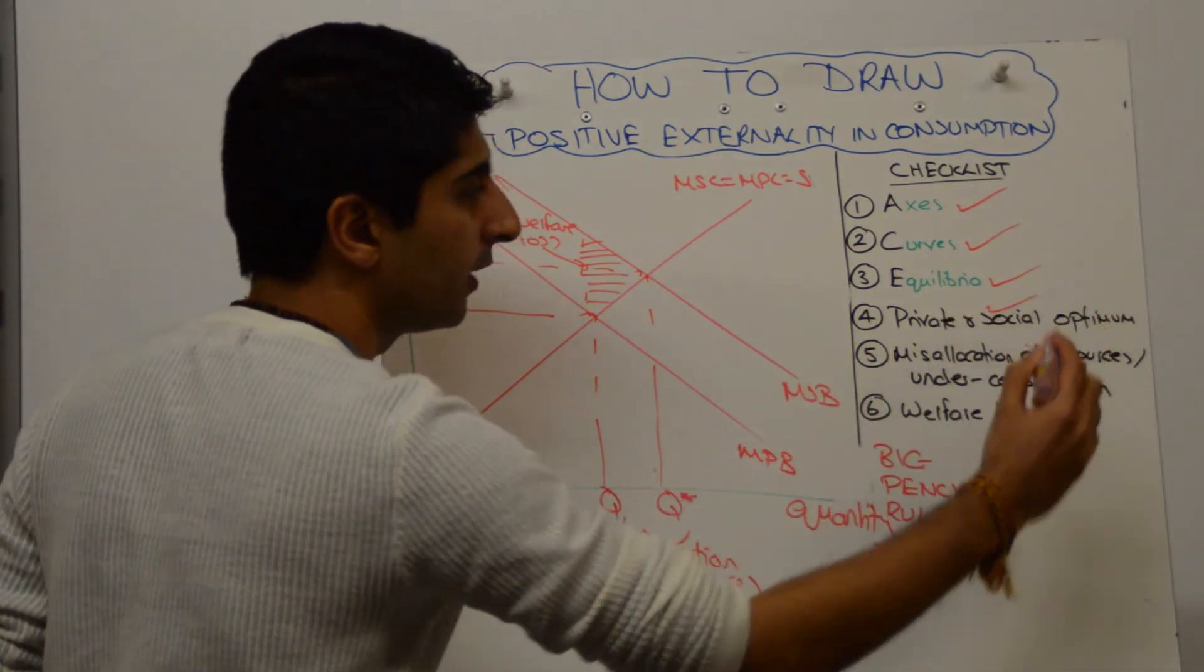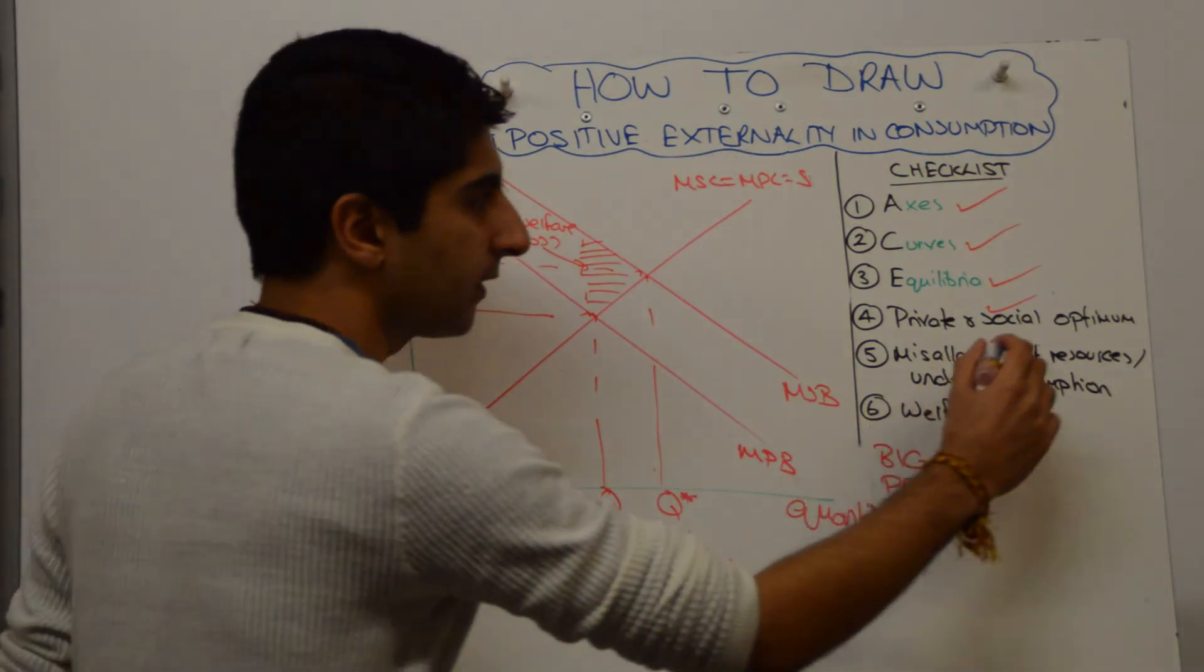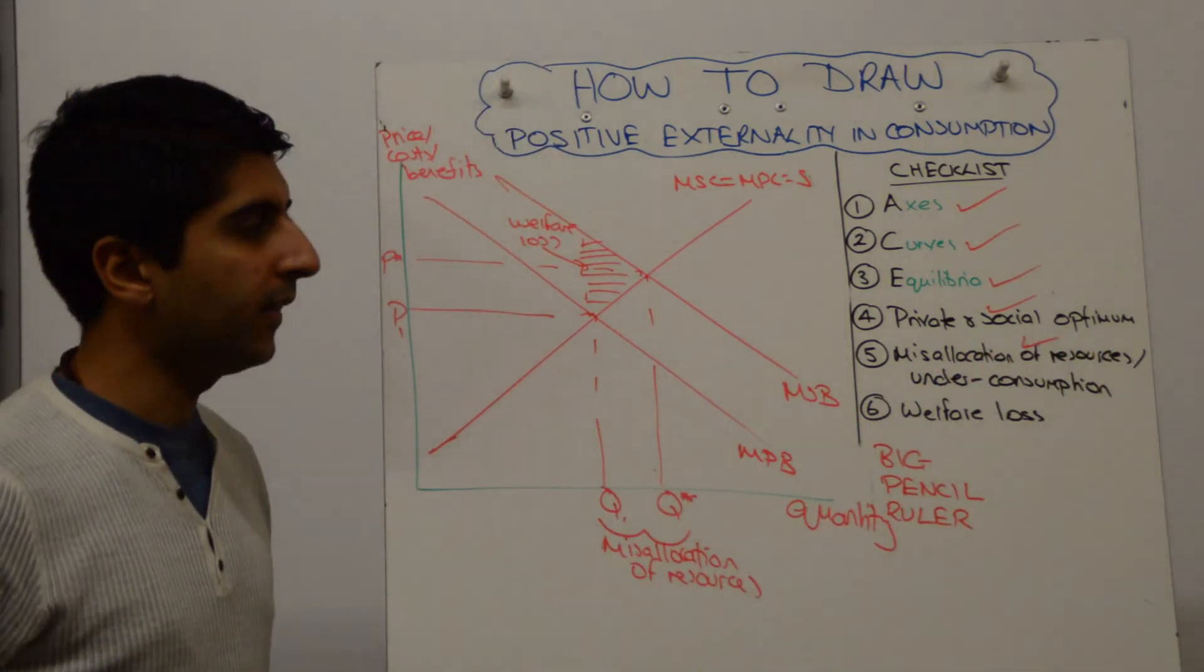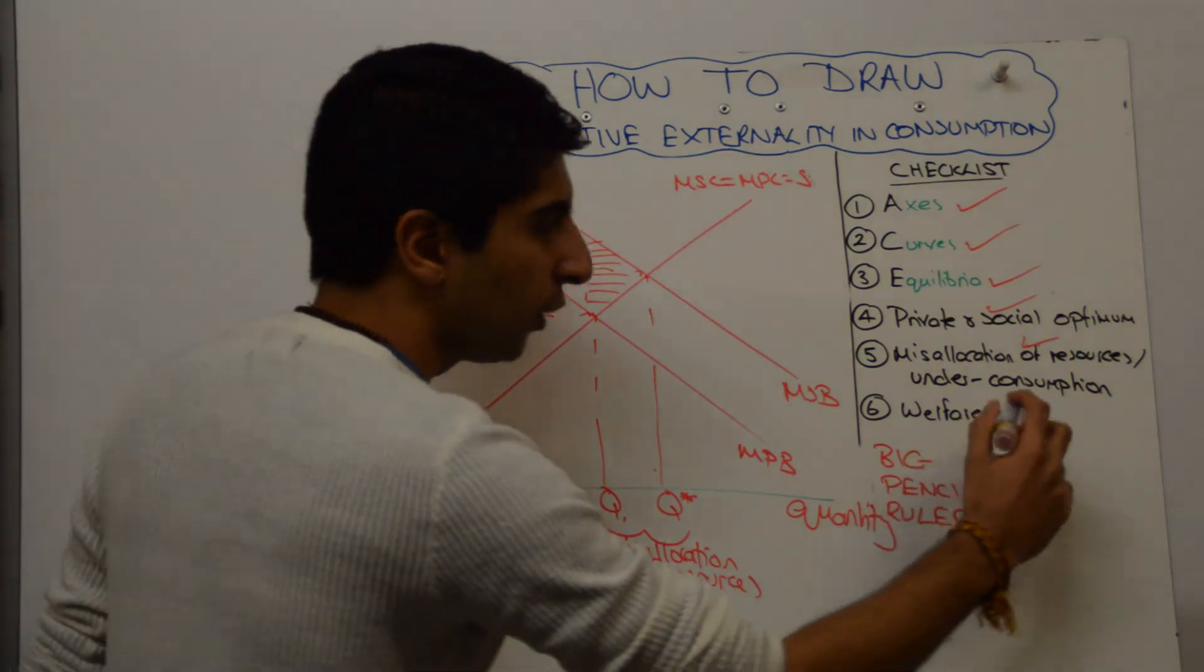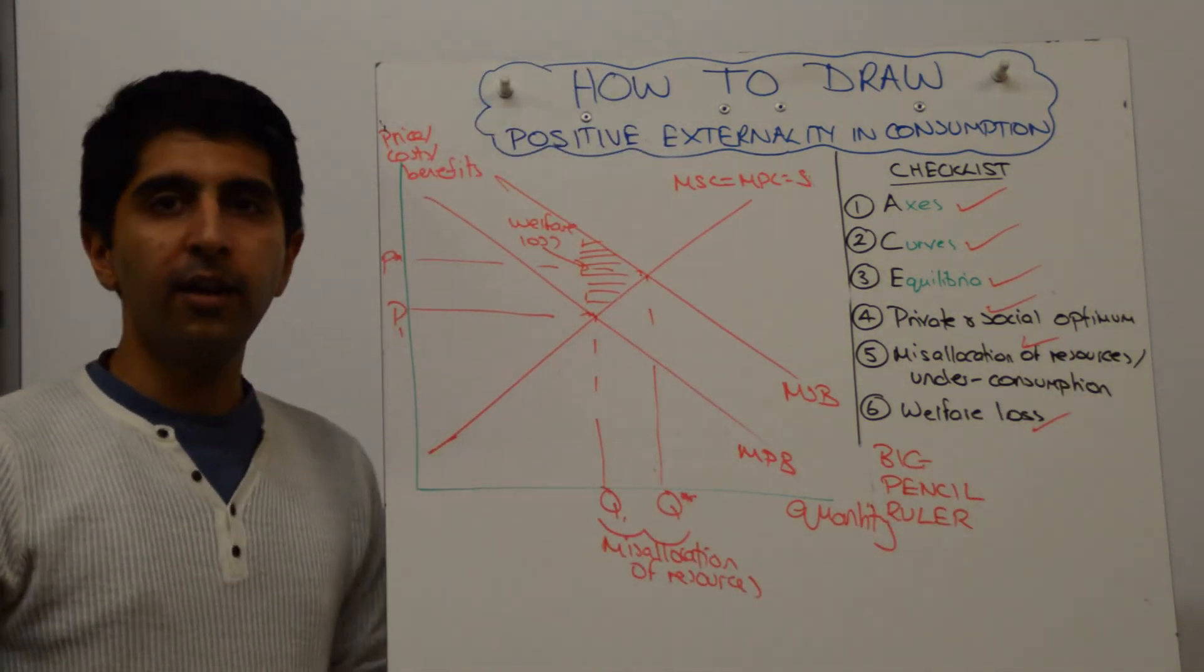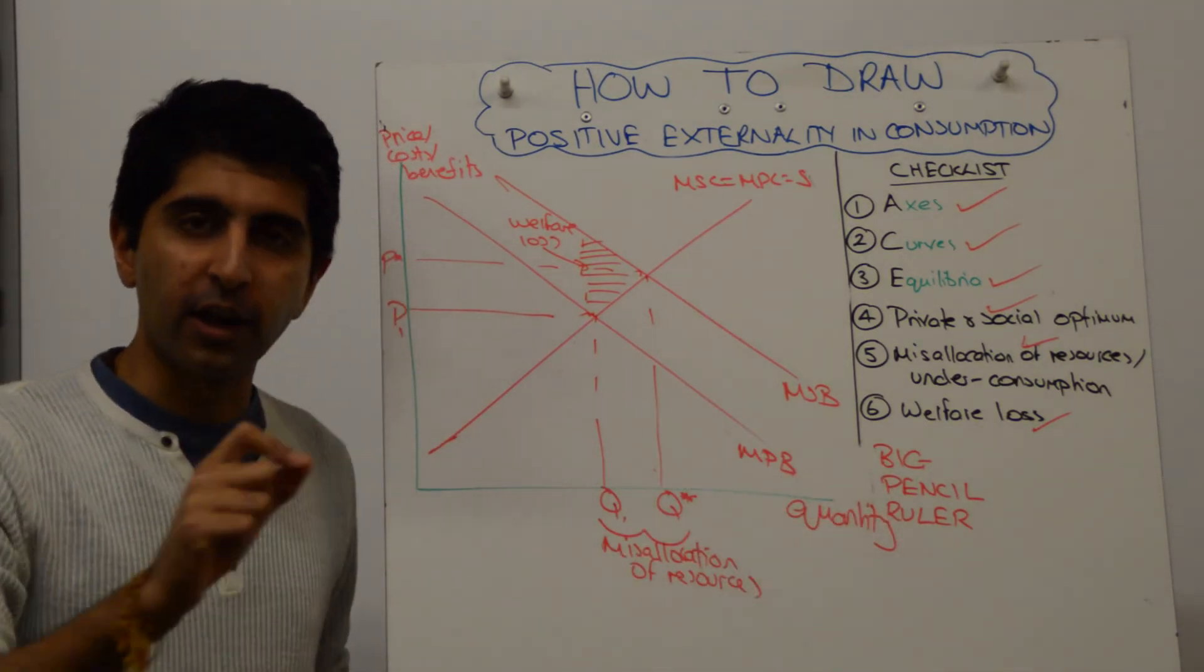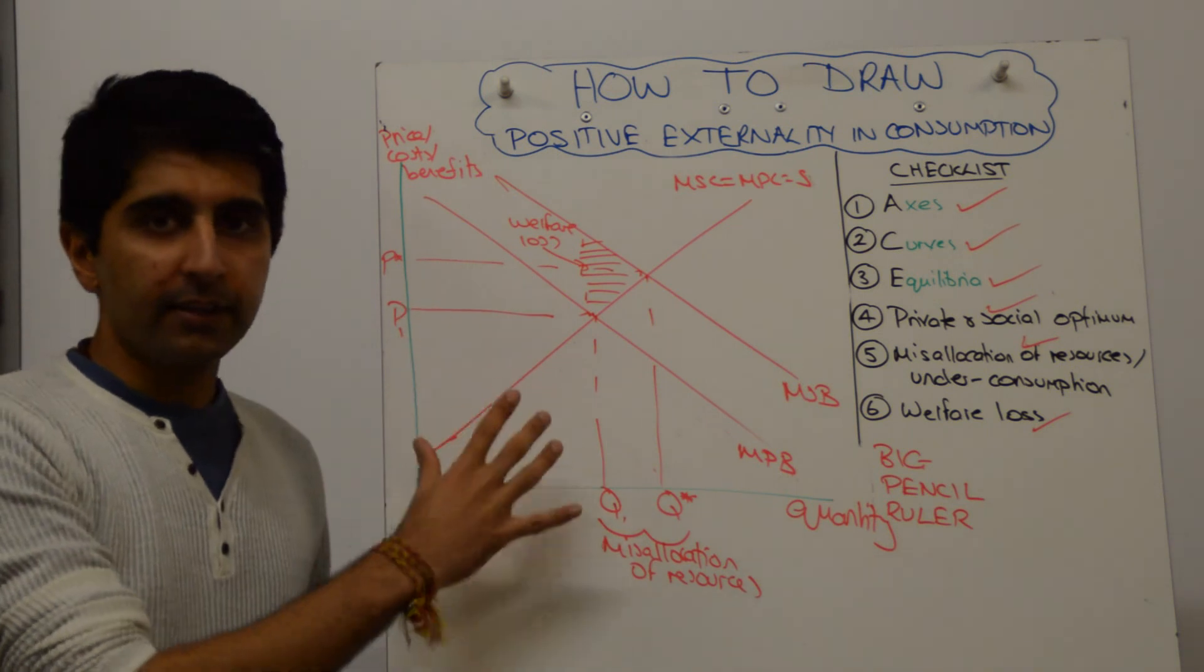Have I made it explicit that I've shown the misallocation of resources? Yes. I've labelled it. It can't be more clear than that. Have I shown my welfare loss? Yes. Well, then all the key things I needed to do in this diagram have been done. Diagram over. As long as it's big, we're drawing in pencil and using a ruler.